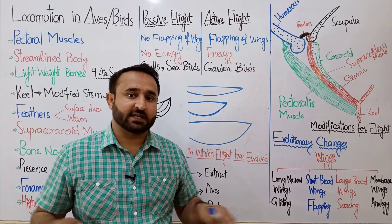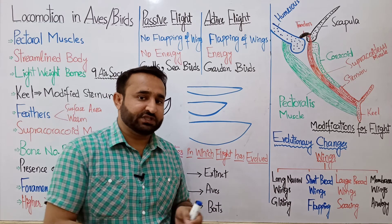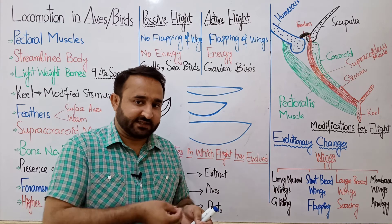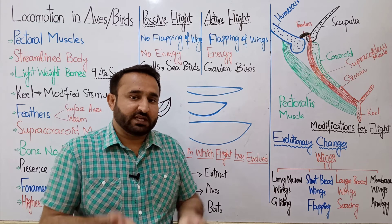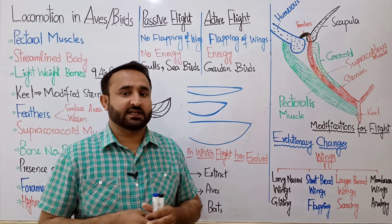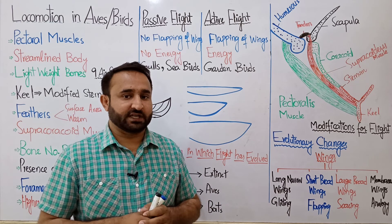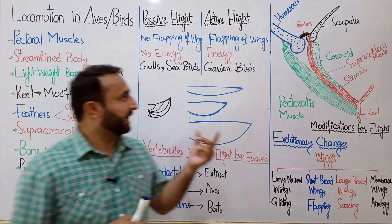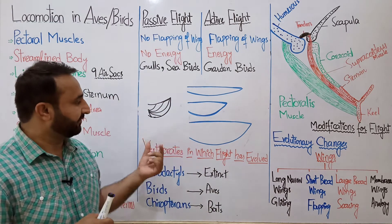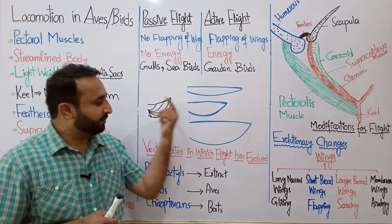जब पर फड़फड़ाते हैं तो नीचे air pressure generate होता है जो परिंदे को lift provide करता है — इस से ये उठे रहते हैं। तो यह active और passive flight का difference है जो हम बाद में detail में देखेंगे।